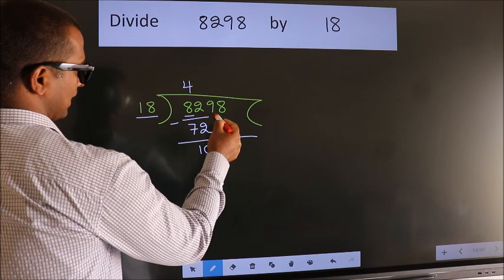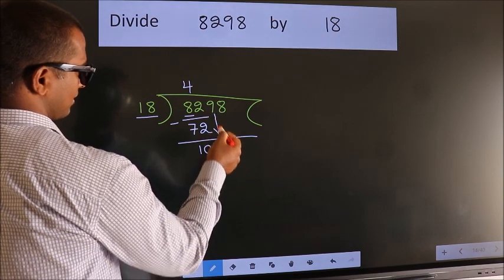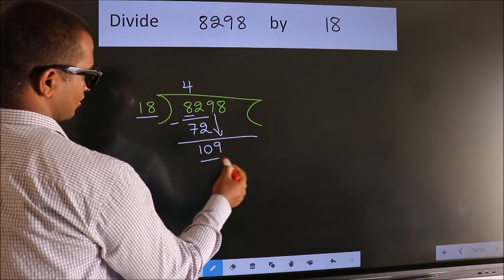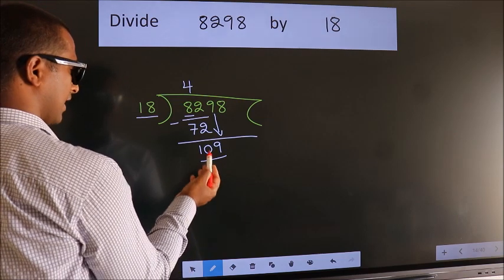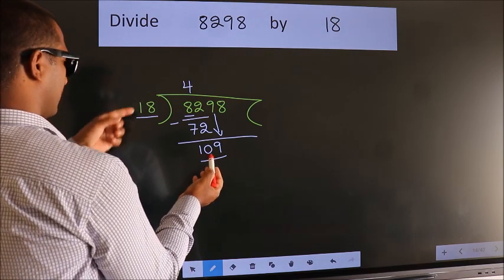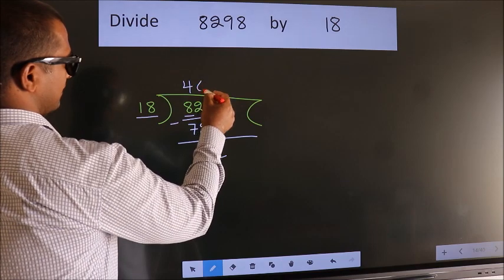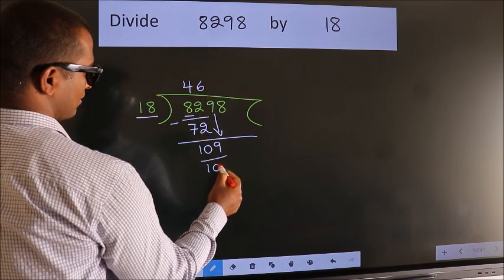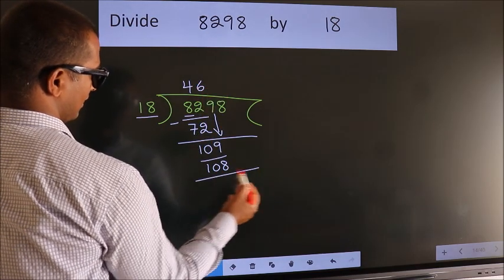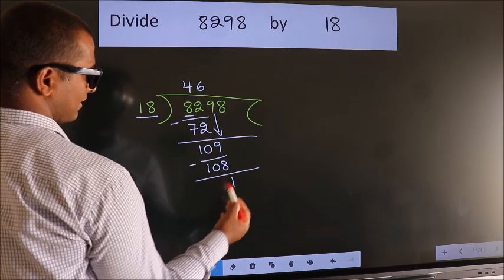After this, bring down the next number. So 9 down, making 109. A number close to 109 in the 18 table is 18 times 6 equals 108. Now we subtract. We get 1.